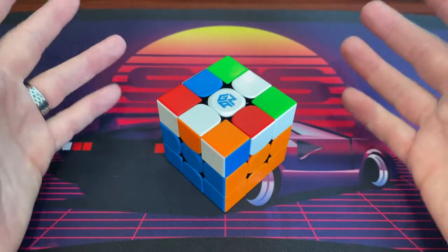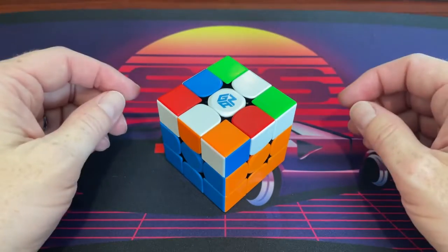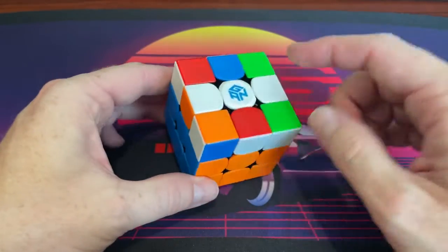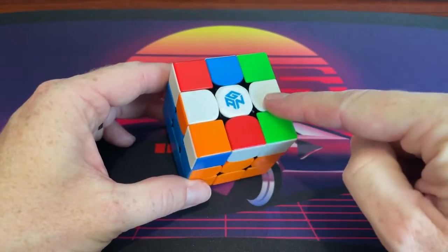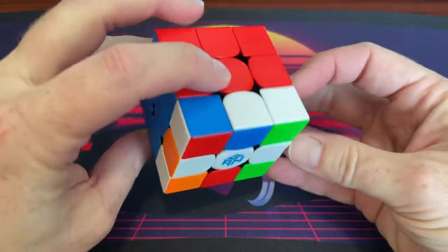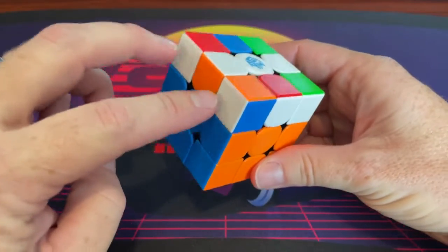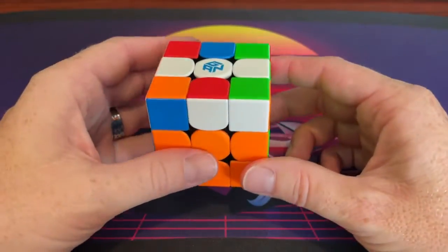OLL 51 is the same thing but with wide F moves. It's still double sexy moves. You can recognize this case by this obvious line as well as this 1x2 bar on both sides and headlights. And the case goes like this.